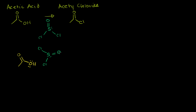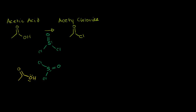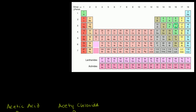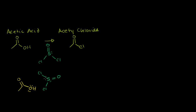Chlorine and oxygen are both more electronegative than sulfur, so sulfur has a partial positive charge, even though sulfur is reasonably electronegative on its own. These other atoms are sucking electrons away from it. So the oxygen of the acetic acid can act as a nucleophile, giving an electron to the sulfur of thionyl chloride, which has a partial positive charge.